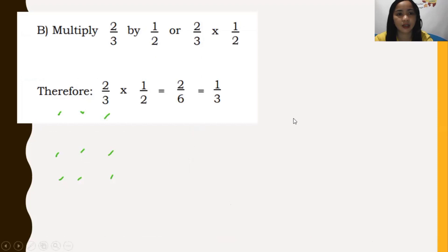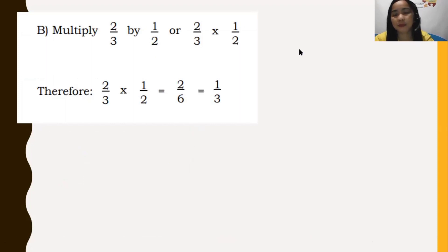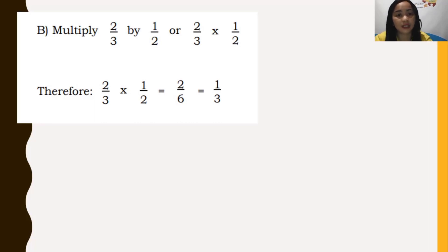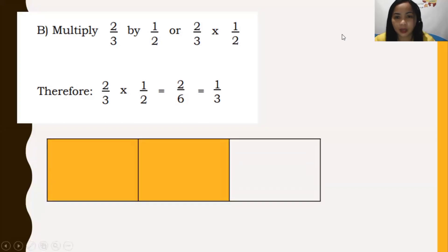Let's have Example B: multiply two-thirds by one-half. The answer is two-thirds times one-half equals two-sixths, or one-third. Now let's see how to visualize this. We have here the representation of two-thirds — two shaded portions out of three parts.